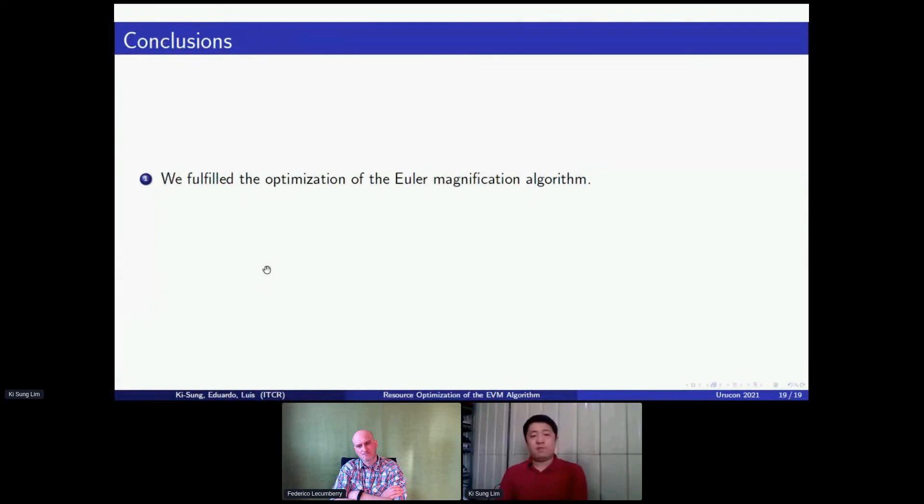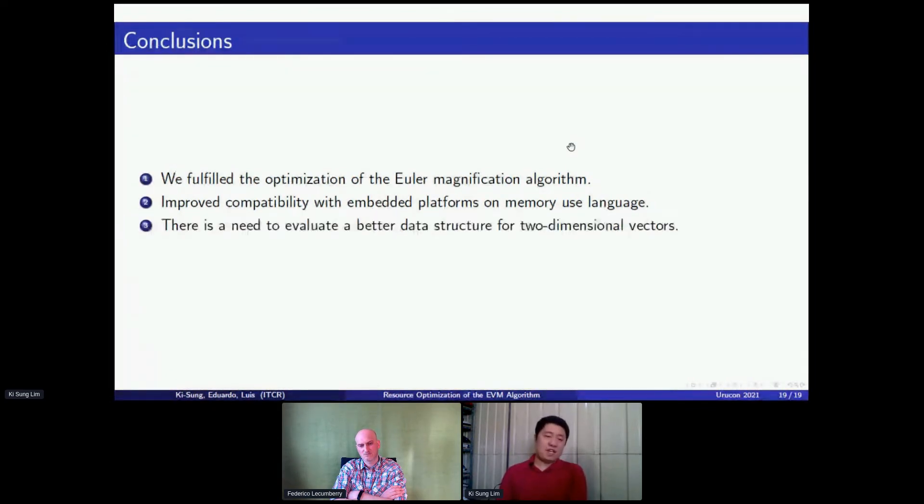Reaching our conclusions of our project, we have that we fulfilled the optimization of the Euler magnification algorithm in the system of study that we used, also towards the preparation of the implementation of the algorithm in embedded systems. We improved the compatibility with embedded platforms because of the reduction of memory usage and the use of a low-level language. As a third conclusion, we have that there is a need to evaluate various data structures for alternative improvement of the algorithm for two-dimensional vectors that were used in the processing of the algorithm. Finishing the presentation, thank you for your attention and if there is any question, go ahead, you are free to ask.